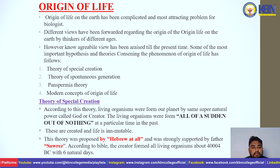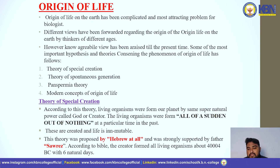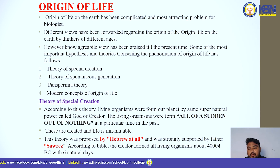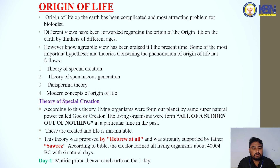The first is the Theory of Special Creation. According to this theory, living organisms were formed on this planet by a supernatural power called God or the creator. The living organisms were created suddenly out of nothing at a particular time in the past. This theory was proposed by Hebrew scholars and strongly supported by religious fathers. According to the Bible, the creator formed all living organisms about 4004 BC within six natural days.